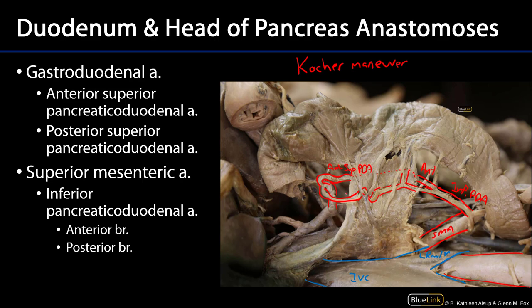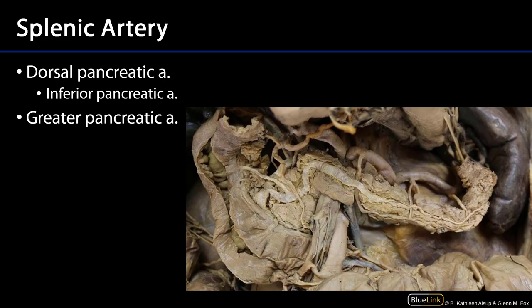The pancreas is more than just the head and the neck, however. The remainder of the blood flow to the pancreas is going to come from another branch of the celiac trunk called the splenic artery. The splenic artery is a massive tortuous artery heading out to supply the spleen, the stomach, and of course the pancreas with blood.